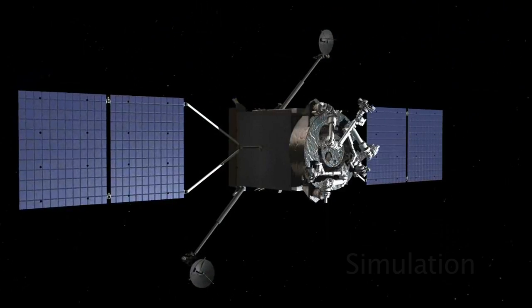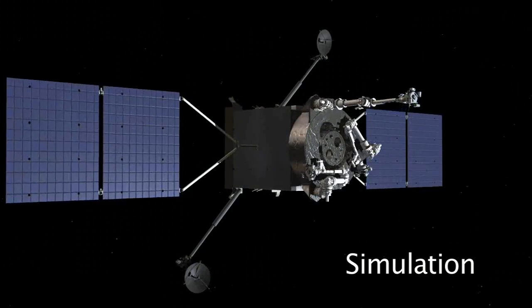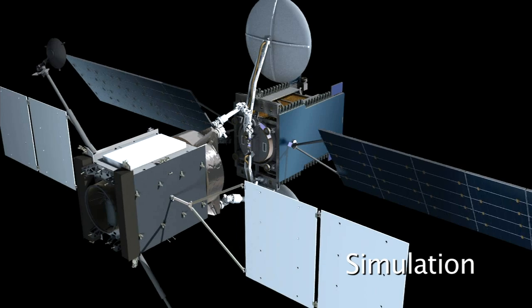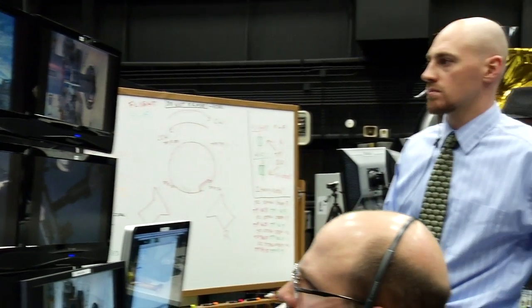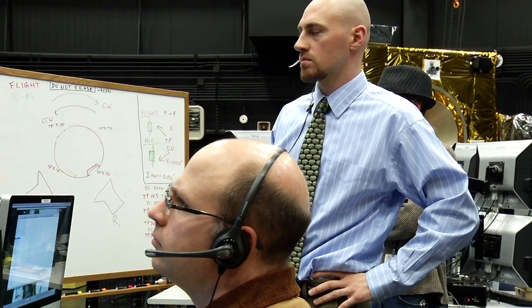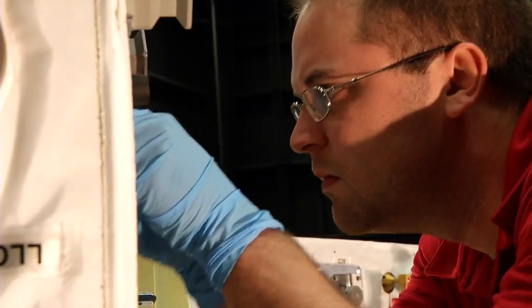NASA wants to prove that robots make sense in space for all sorts of jobs, including the refueling of aging satellites. Midway into the mission, the team preps for the main event. But many steps need to happen before the refueling test.